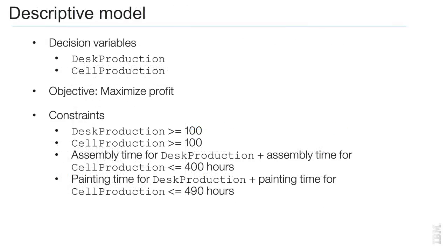A possible descriptive model of this telephone production problem is as follows. The decision variables are the number of desk phones and cellular phones to be produced. The objective is to maximise profit. The constraints are that the desk production and the cell production must be greater than or equal to 100. The assembly time for the desk production plus the assembly time for the cell production must not exceed 400 hours.